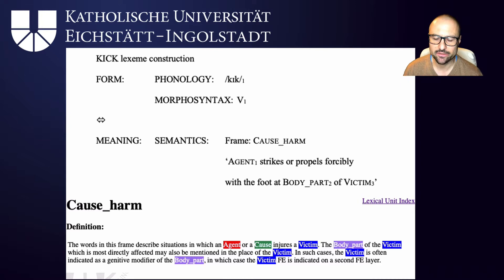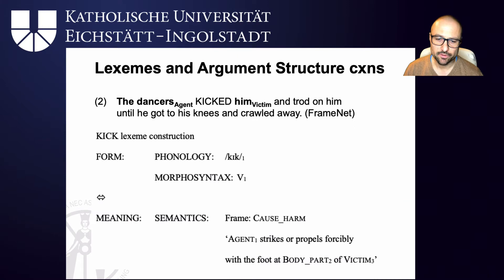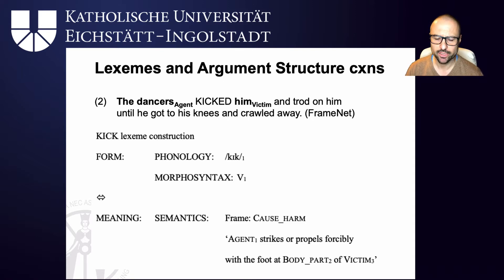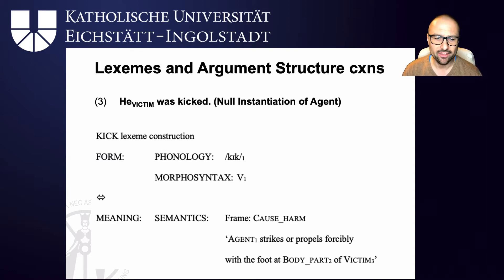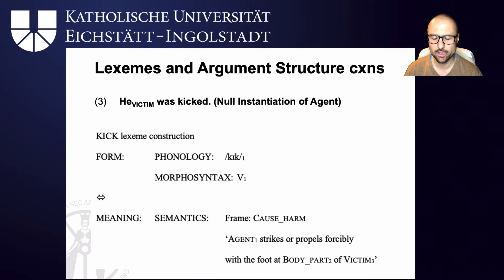Lexeme constructions merge with morphological constructions to give us the right inflections, but also with argument structure constructions. 'Kick' for example easily merges with a transitive construction: 'The dancers kicked him and trod on him until he got to his knees and crawled away,' where 'the dancers' are the agent and 'him' is the victim. In some situations, certain elements can be backgrounded — this is called null instantiation. One such valency-changing construction is the passive: in 'he was kicked,' the cause-harm frame is still conjured up but the passive backgrounds the agent and foregrounds only the victim.